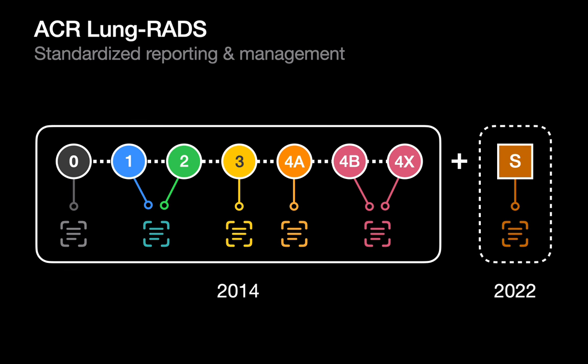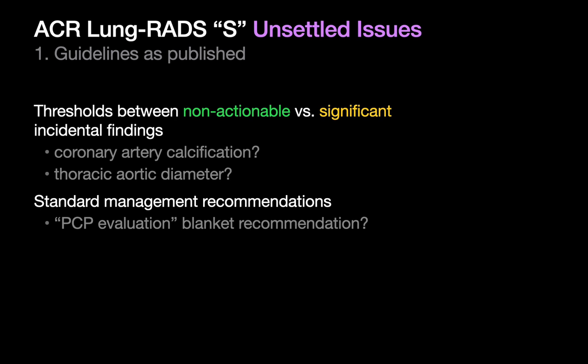While the uptake and implementation of the lung nodule part of the LungRADS workflow, whose framework was first established back in 2014, is pretty uniform across the country, there's a bit less consensus when it comes to the implementation of the incidental findings part of this workflow, whose framework hadn't really been fleshed out until very recently. Some unsettled issues about their implementation currently exist amongst many radiologists and other stakeholders. Differences in opinion exist with regards to the thresholds between what's non-actionable versus what's significant, and also about some of the standard management recommendations. Not everyone's in agreement about the thresholds for coronary artery calcification and thoracic aortic diameter, for example, or blanket recommendations like PCP evaluation.